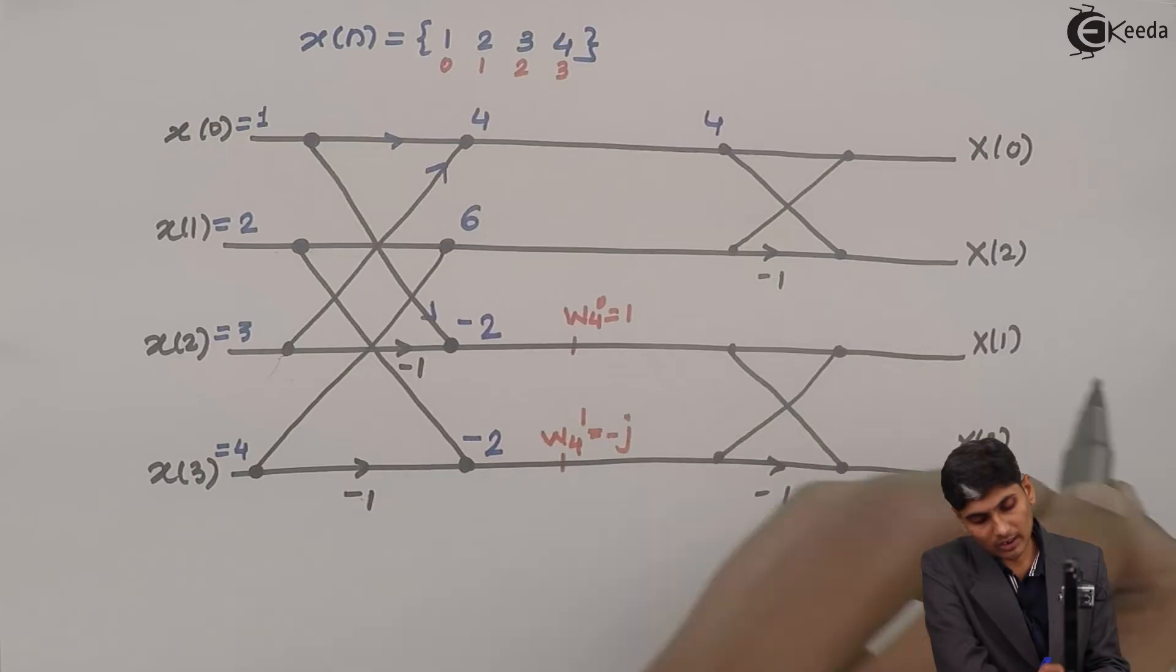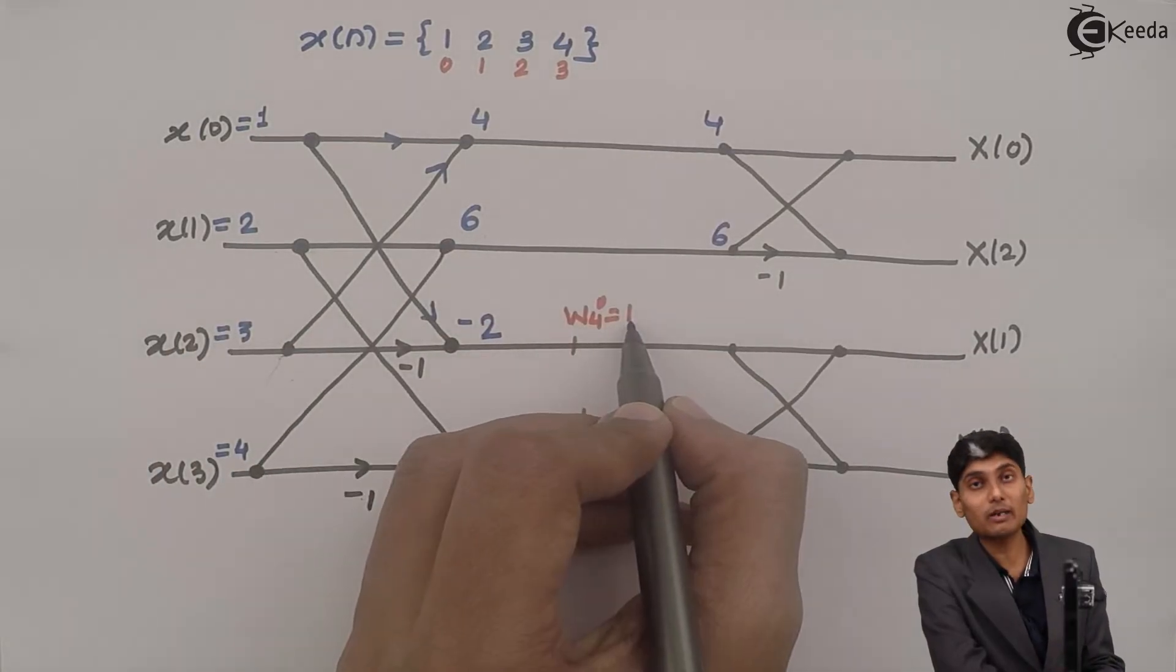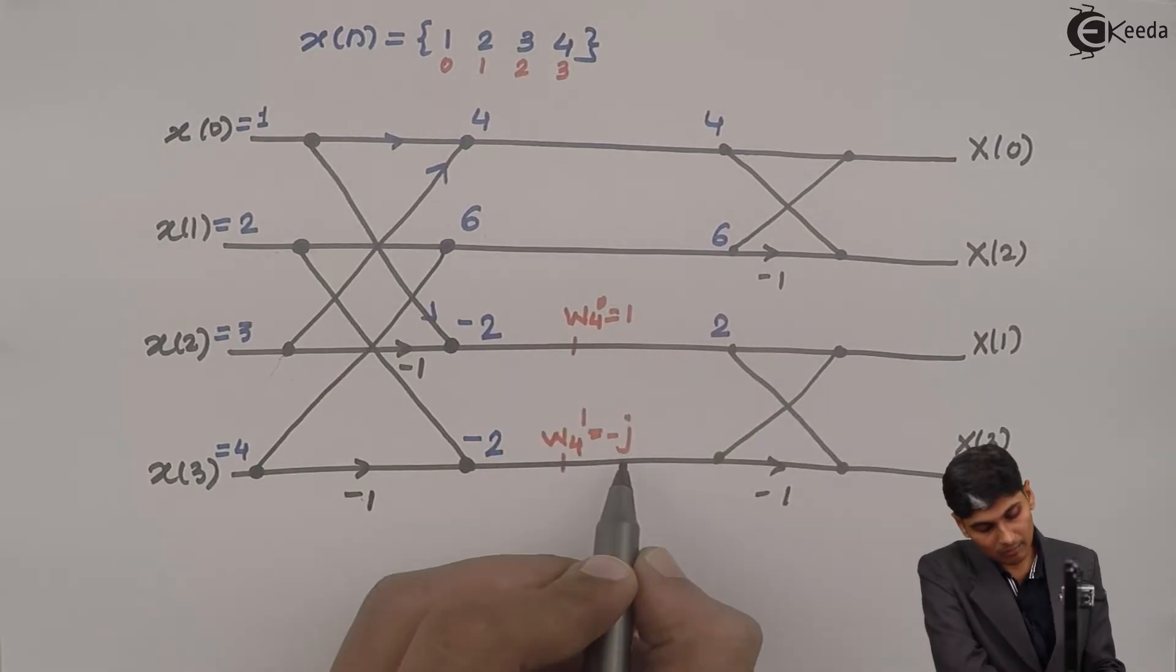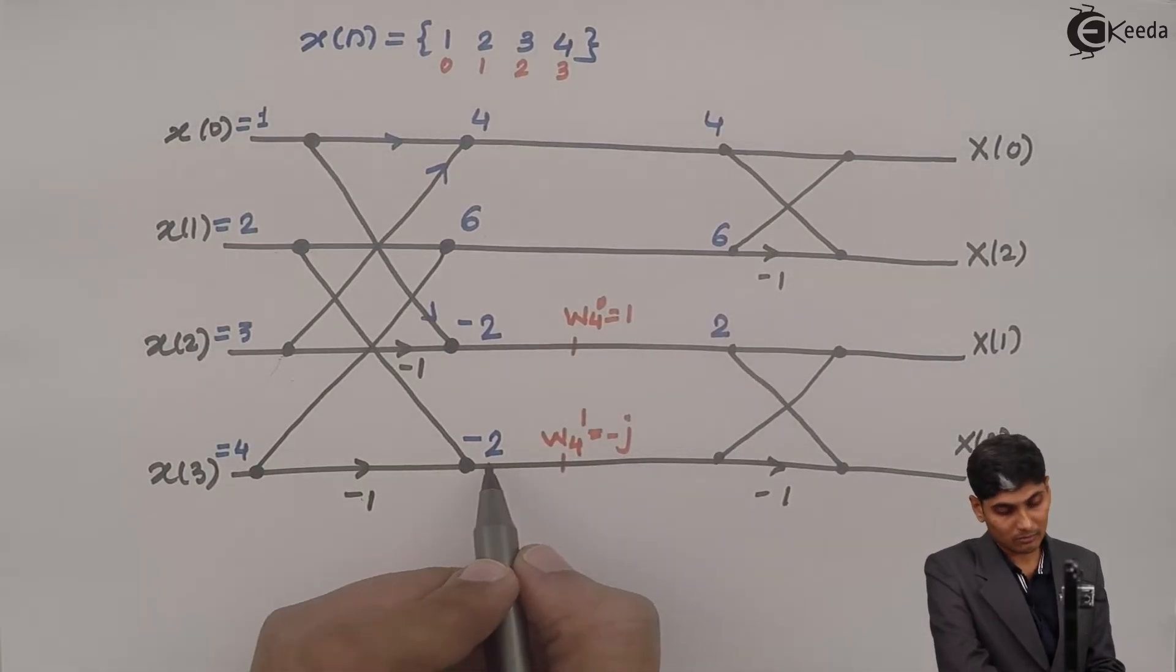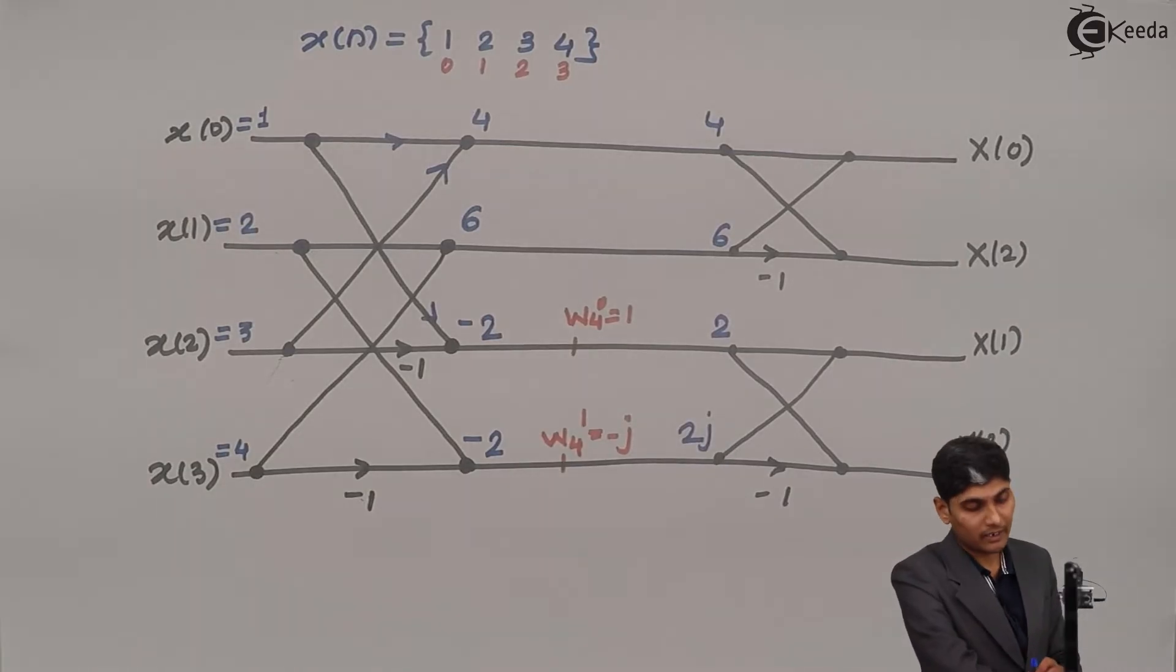Now there is no multiplier over here, so I write 4 as it is, 6 as it is. Now minus 2 multiplied by 1 is minus 2, and minus j multiplied by minus 2 is 2j.